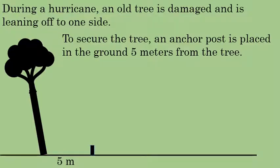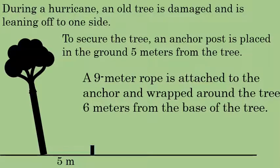Five meters away from the tree there's an anchor post that will be used to secure the tree to make sure it doesn't fall over. A nine-meter rope is attached to this anchor post and it's wrapped around the tree, and it's wrapped around the tree six meters from the base of the tree.